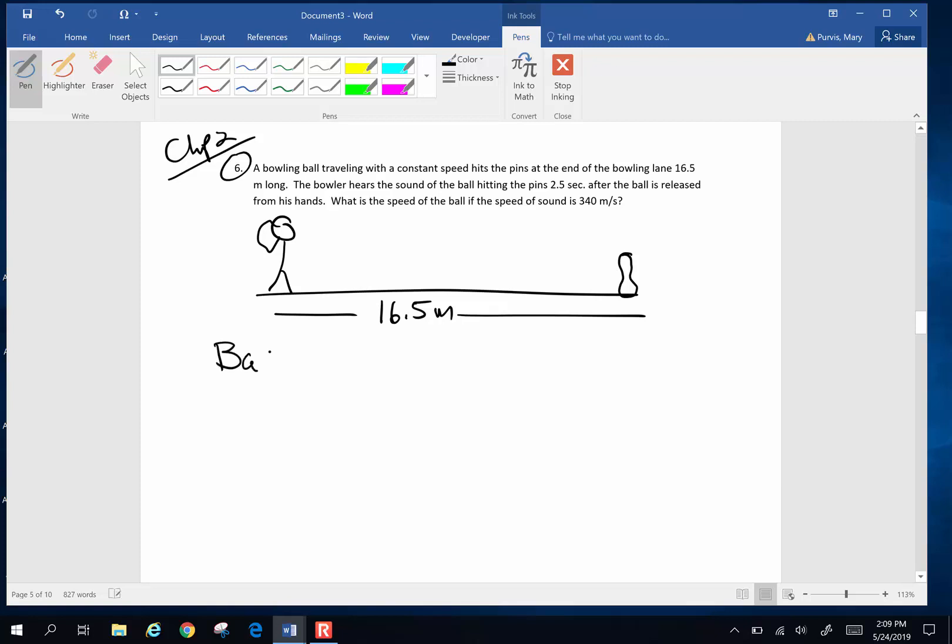We've got the ball and we have the sound. If you have two moving objects, put a column of data down for each object that is in motion. Now the ball is going to move a distance of 16.5 meters. So the bowler throws it down 16.5 meters, but the bowler hears the sound of the ball hitting the pins 2.5 seconds after the ball is released. So the ball is released and the sound waves come back and travel the distance of 16.5 meters, and the sound takes 2.5 seconds, and the speed of sound is 340, which is a very reasonable value for the speed of sound.